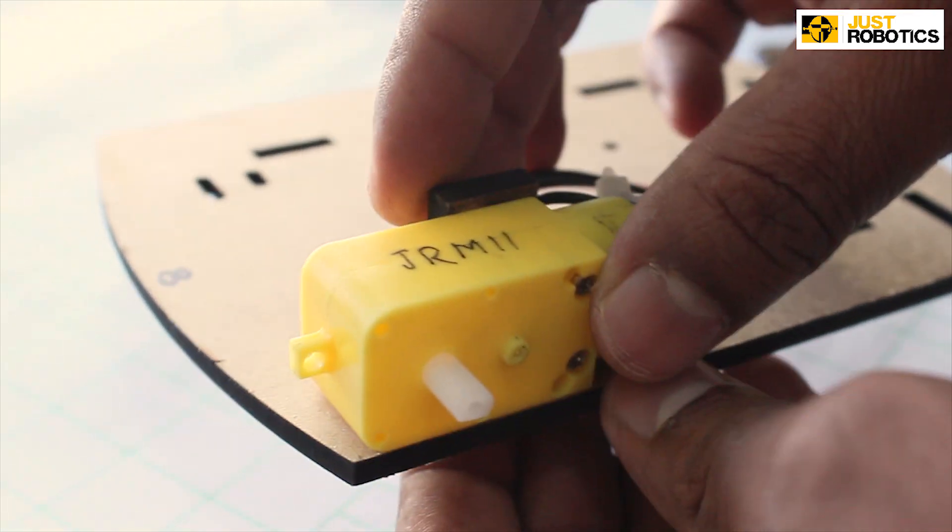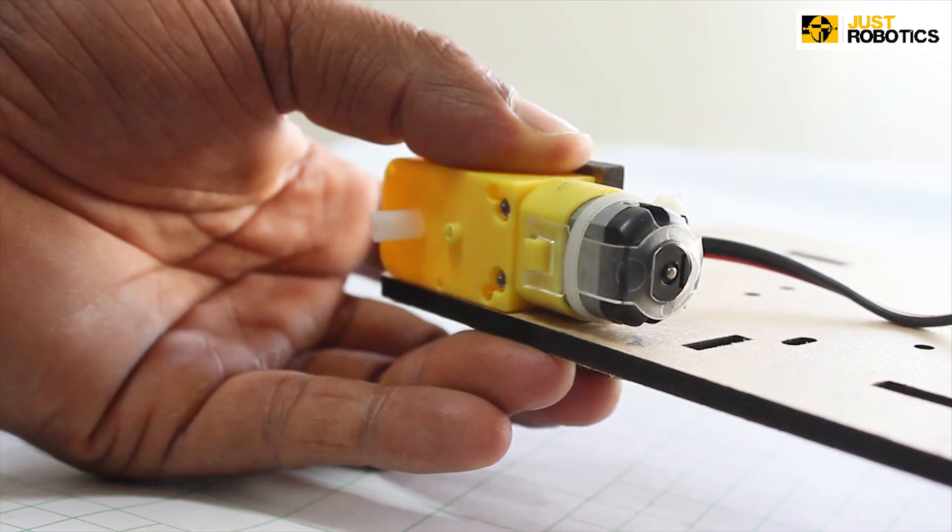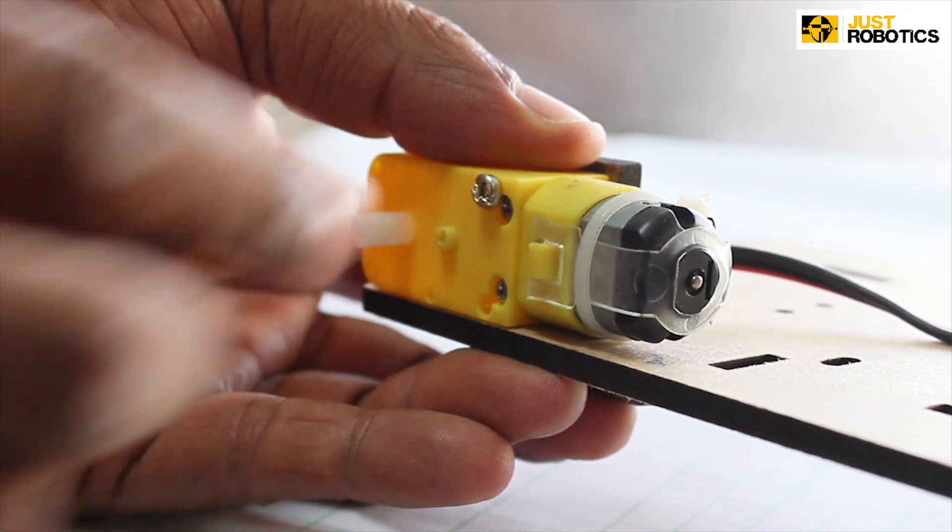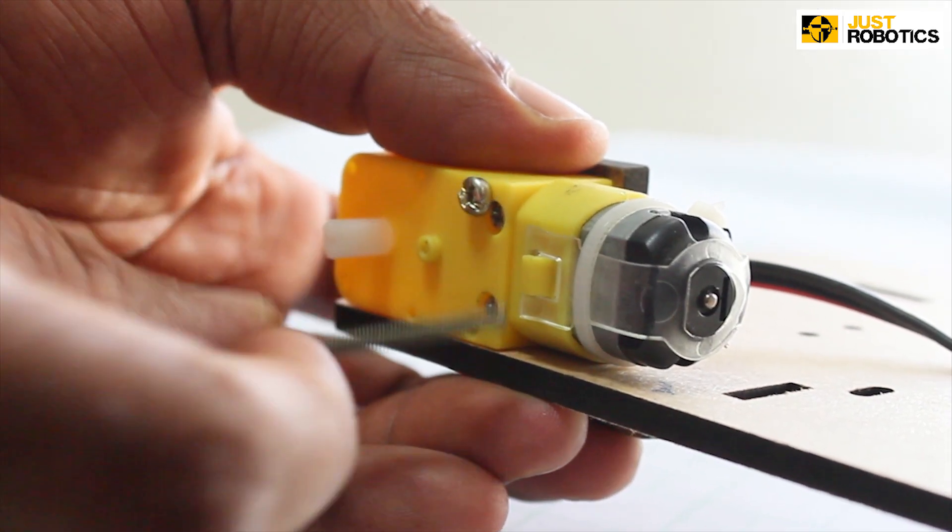Now bring in your battery operated motor and match those two holes on the motor with the T-clamp. Now put a bolt through the hole passing through both the motor and the T-clamp.